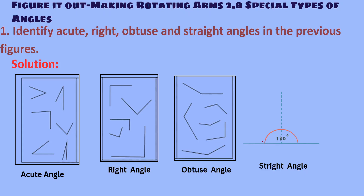Question 1 from Making Rotating Arms and Special Types of Angles: Identify acute, right, obtuse, and straight angles in the previous figure. As we observed, the first figure is an acute angle, the second one is a right angle, the third one is an obtuse angle, and the fourth one is a straight angle.